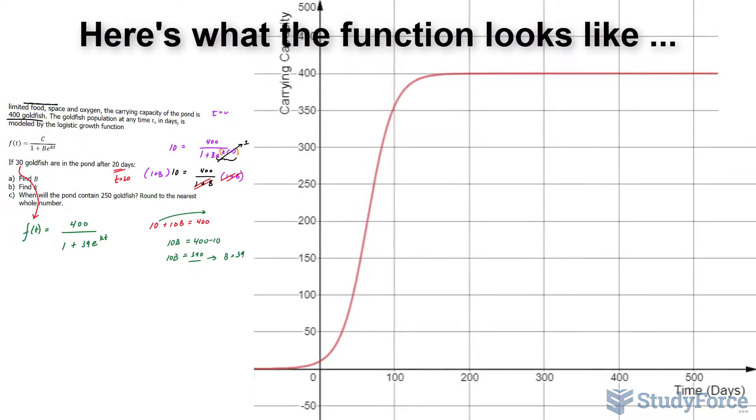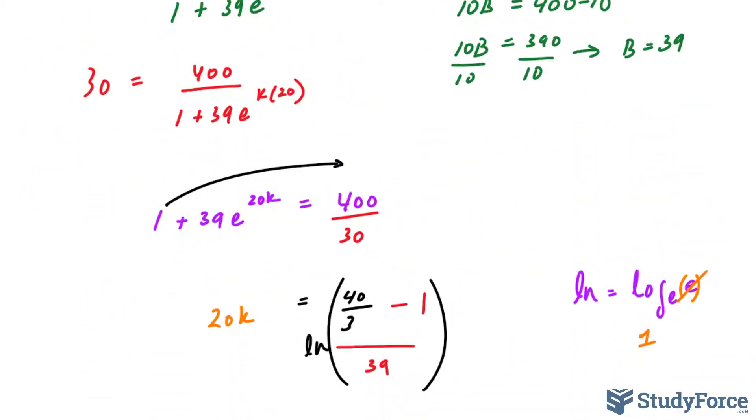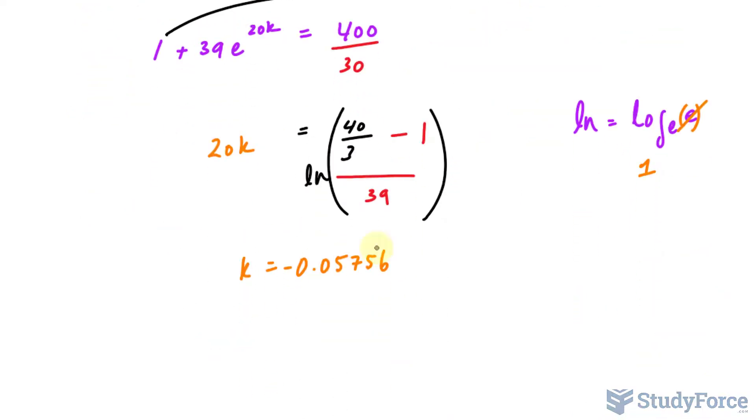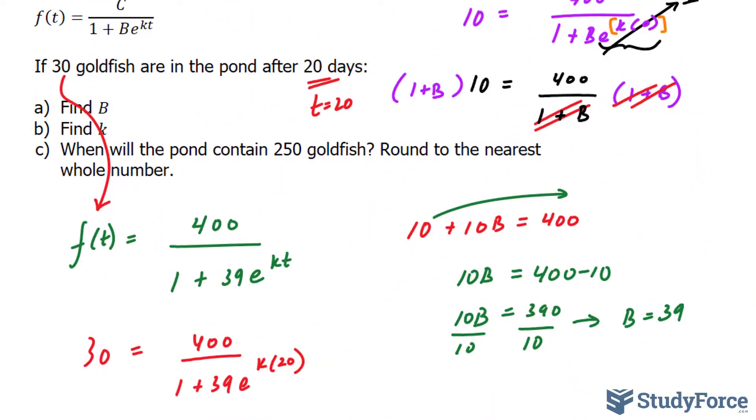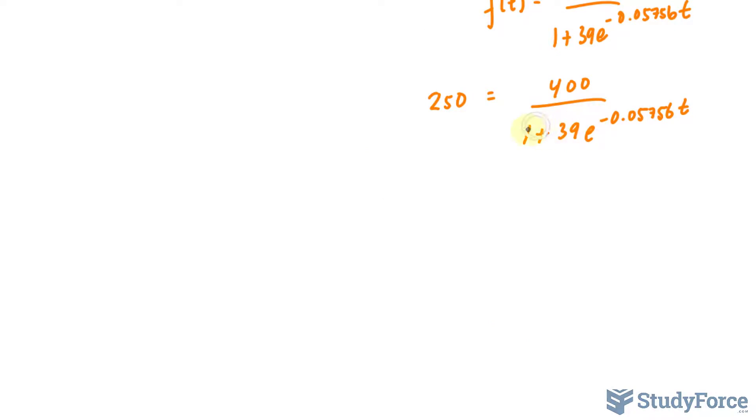And in question c, when will the pond contain 250 goldfish? Round to the nearest whole number. Okay. So in this case, we found everything that we need. We have the function right here. We can replace k with what it is. And it's that. Let me rewrite the function. This time they're asking us, when will it have 250? So I'll replace this with 250. And this time I will solve for t. Let me rewrite the right side.